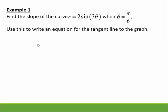So finding the slope of that curve when theta equals π/6, use this to write the equation of the tangent line. Okay, so equation of a tangent line: y minus y1 equals m times x minus x1. So first you have to plug in and get x and y.